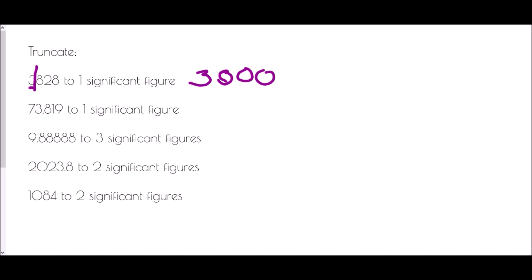In the next one we have 73.819 and we need to truncate this to one significant figure. Our first significant figure is the 7, so we're going to cut off after that point. The 7 remains the same but the 3 after it becomes a zero — we could add 0.000 but it wouldn't make any difference, the number would still be 70. In the next example, we truncate to three significant figures, counting the first, second, and third significant figures, and everything before that line remains while everything after it is ignored.